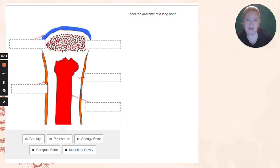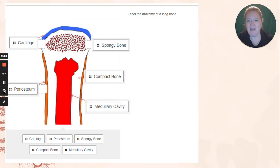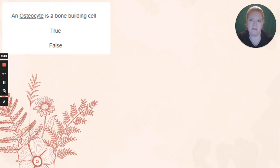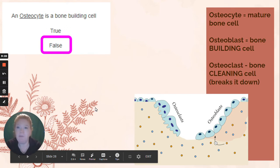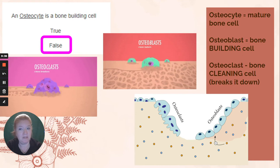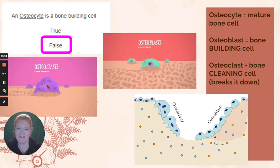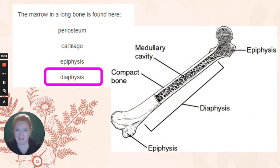Now let's look at bone anatomy. Labeling this image: we have cartilage covering the ends of bones, the periosteum covering the diaphysis. We have spongy bone located in the epiphysis, compact bone in the diaphysis, and the medullary cavity containing marrow in the center of the diaphysis. Here are the types of cells: the osteocyte is the mature bone cell — it helps to regulate the amount of calcium. Osteoblasts are the builders. Osteoclasts are the cleaners — they help to break down bone. Marrow is found in that medullary cavity located in the diaphysis.